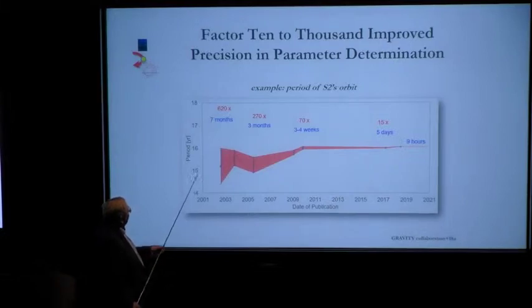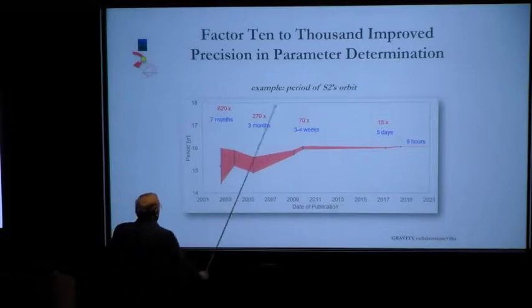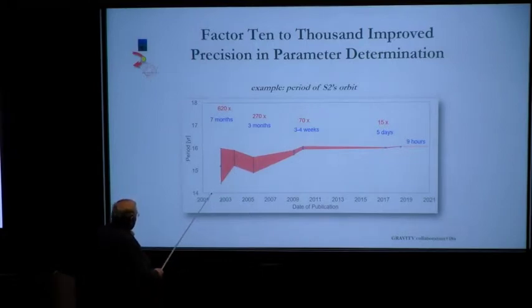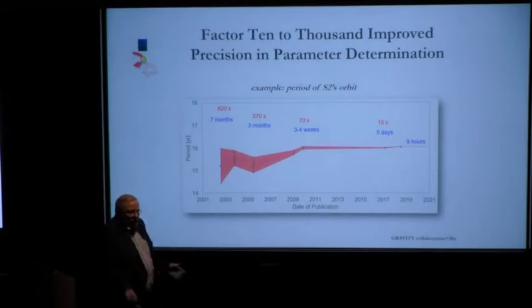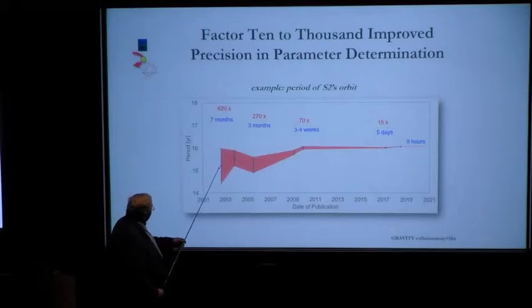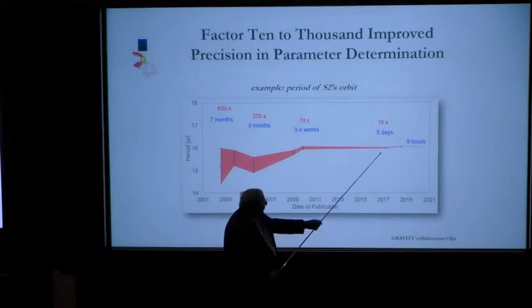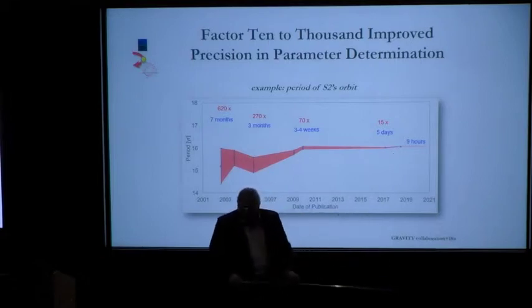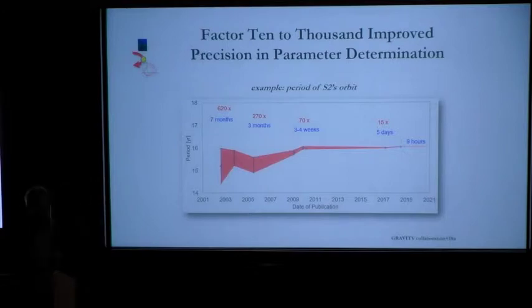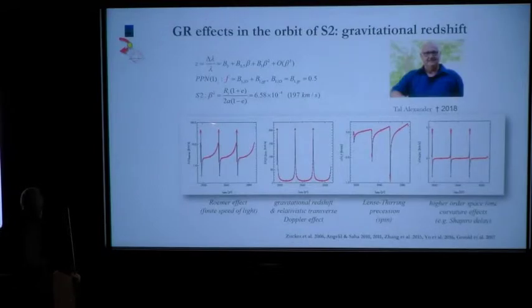And the improvement has been very substantial. So for instance, let me just pick one, which is the period of S2. So before 2002, we didn't know anything because we didn't know that the star was on an elliptical orbit. But then in 2003, after the first peri, we knew it to about half a year. And that improved slowly over the years. But then with GRAVITY, within two years, we came down from days or weeks to hours. We're now at nine hours. We know the arrival to the accuracy of nine hours. And that accuracy is needed to see the effect.